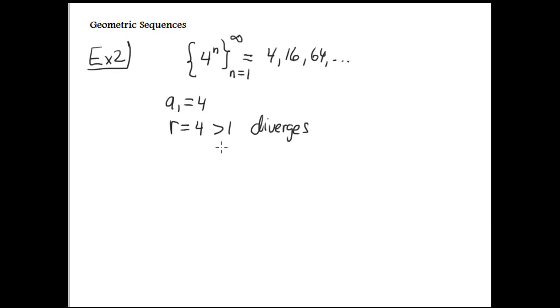Because the common ratio is greater than 1 or equal to 1. To be convergent, it must be less than 1. It's obvious, you apply the limit when n approaches infinity of 4 to the n, 4 to infinity is so big, it's infinity. This is a confirmation.